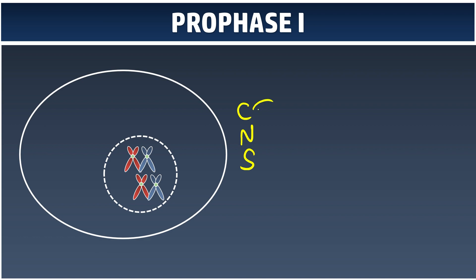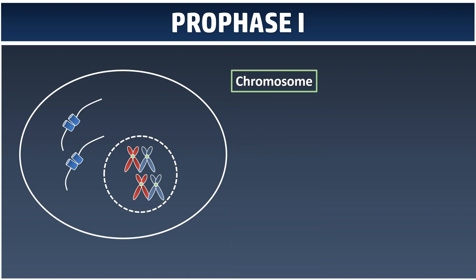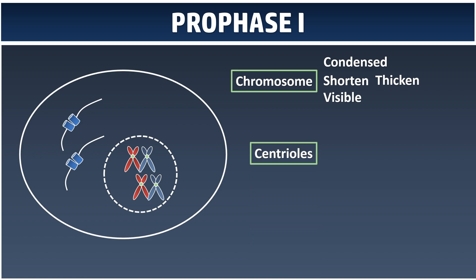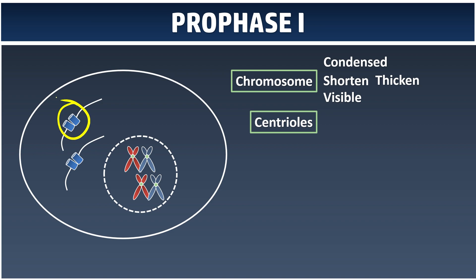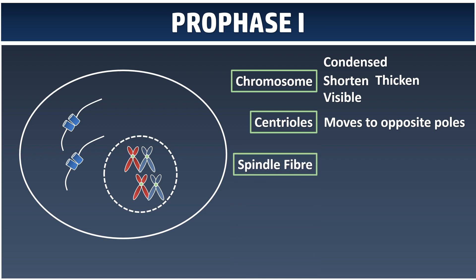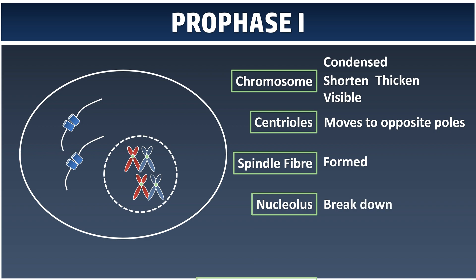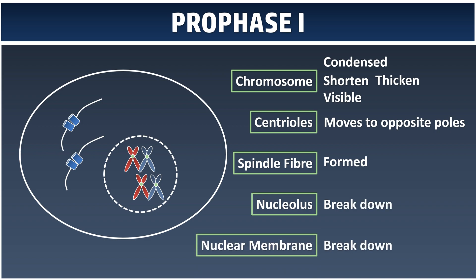The centrioles will move to the opposite poles, where they will attach together with the spindle fiber. And both the nucleus and the nuclear membrane will break down and disappear.